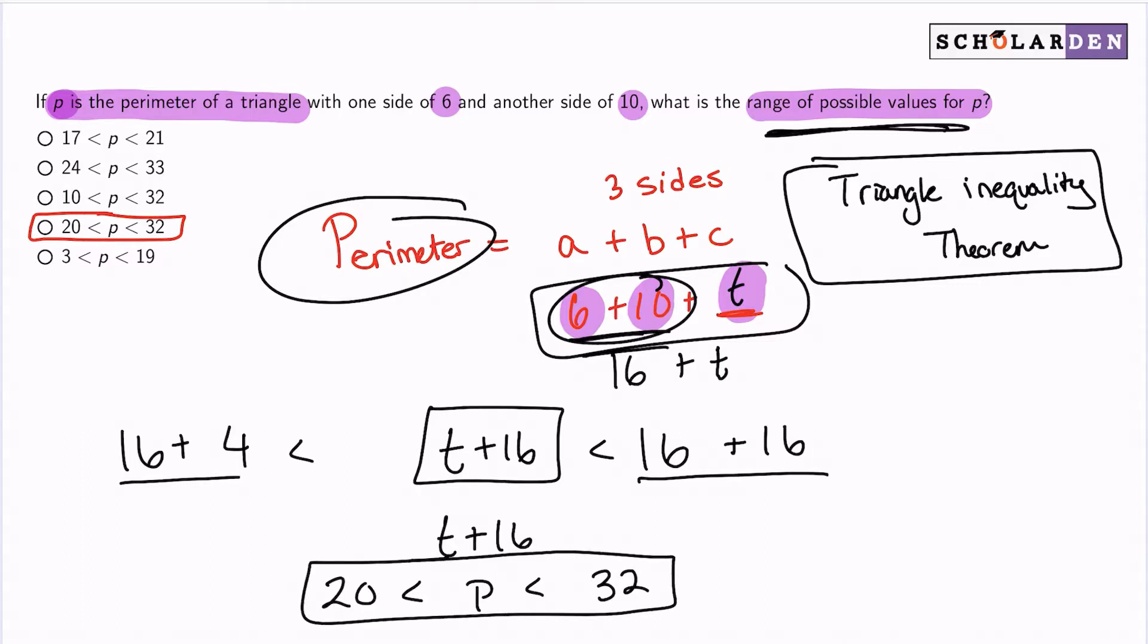Again, my perimeter will be between 20 and 32. Just rewatch the video if that's confusing.